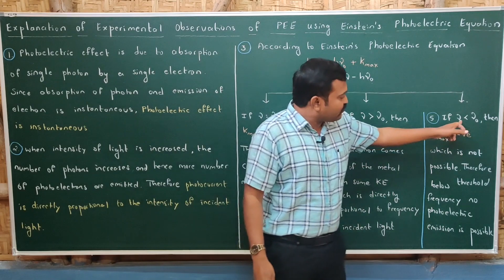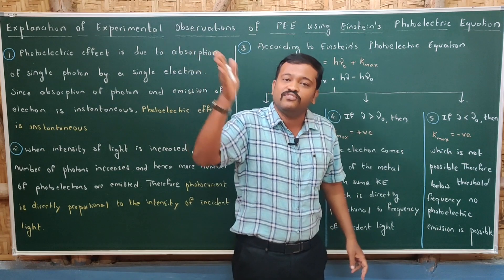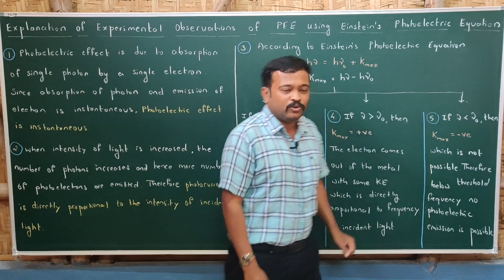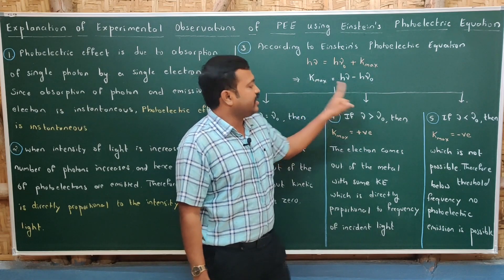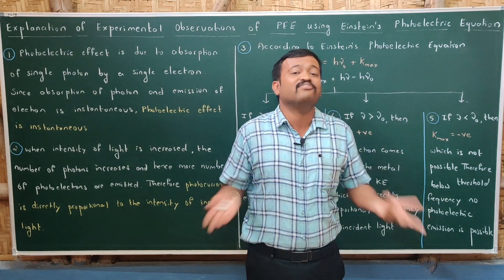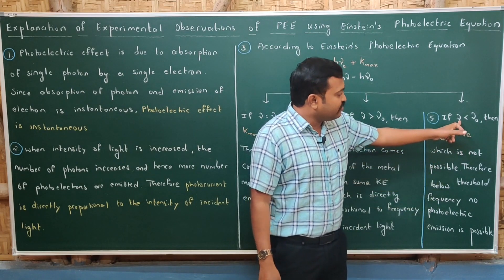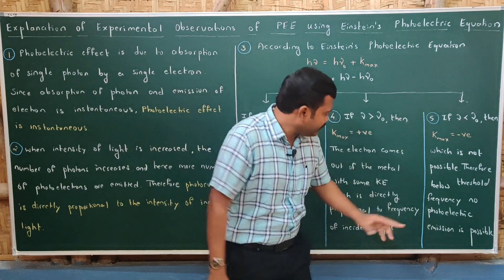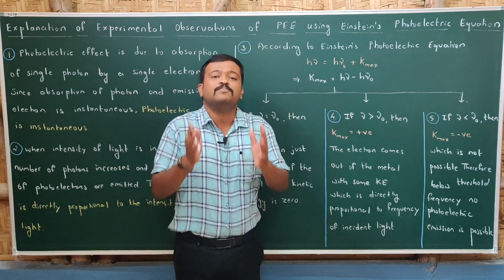In the third case, if the frequency of incident light is less than the threshold frequency, the energy of the photon is less than the work function. Then hν < hν₀, which would make K_max negative — but that is not possible, since kinetic energy can never be negative. Therefore, if the frequency of incident light is less than the threshold frequency, photoelectric emission is not possible at all. Below threshold frequency, no photoelectric emission is possible.